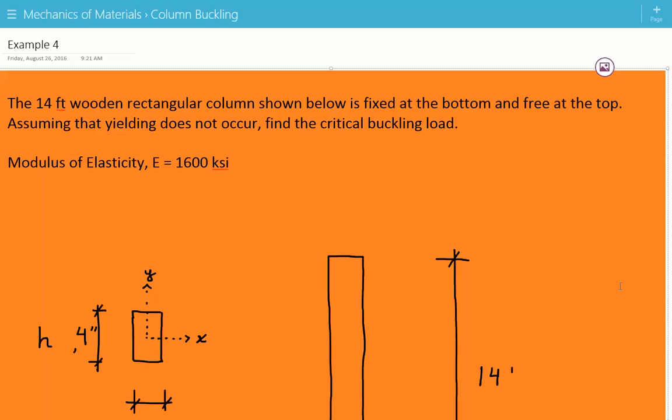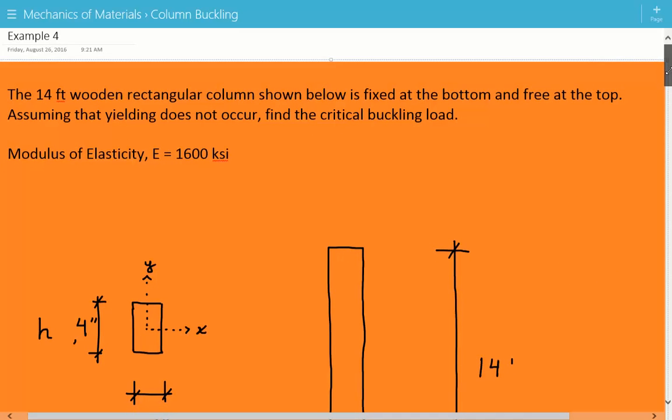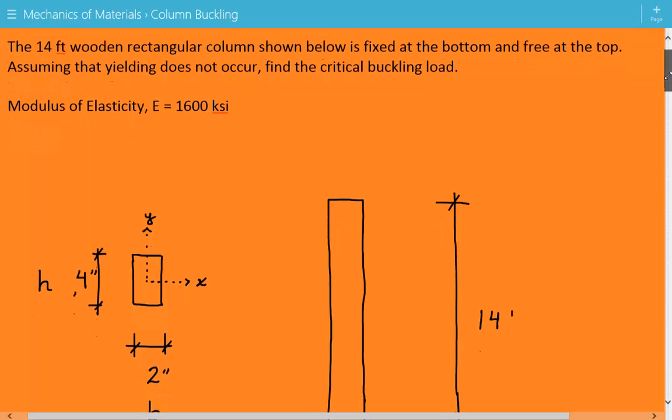The problem statement is: the 14 foot wooden rectangular column shown below is fixed at the bottom and free at the top. Assuming that yielding does not occur, find the critical buckling load. Modulus of elasticity for the wood is E = 1600 ksi.